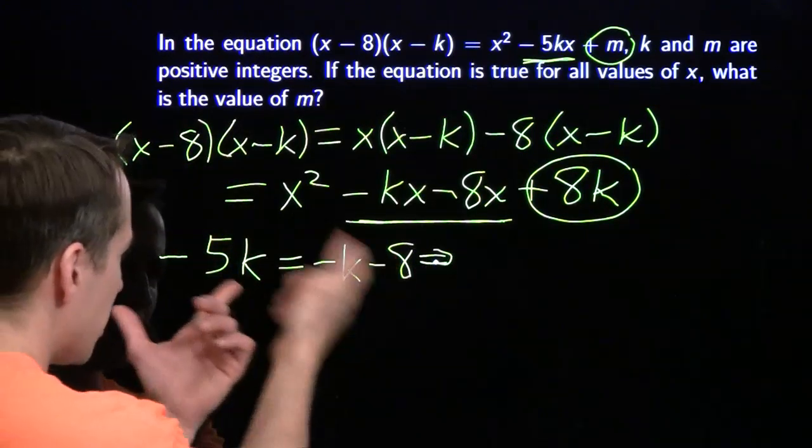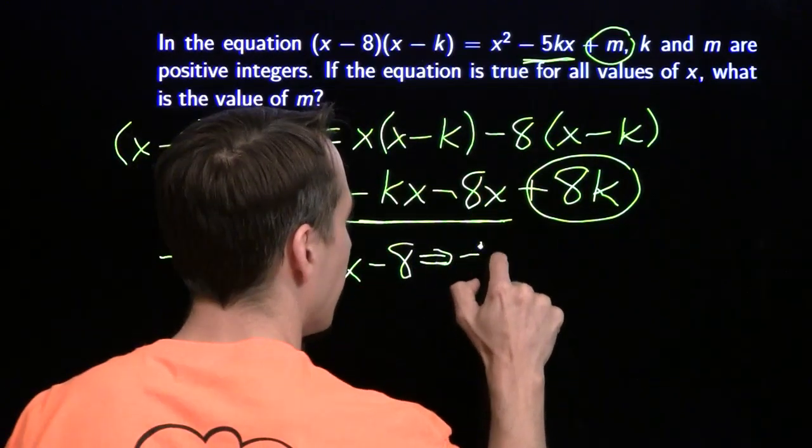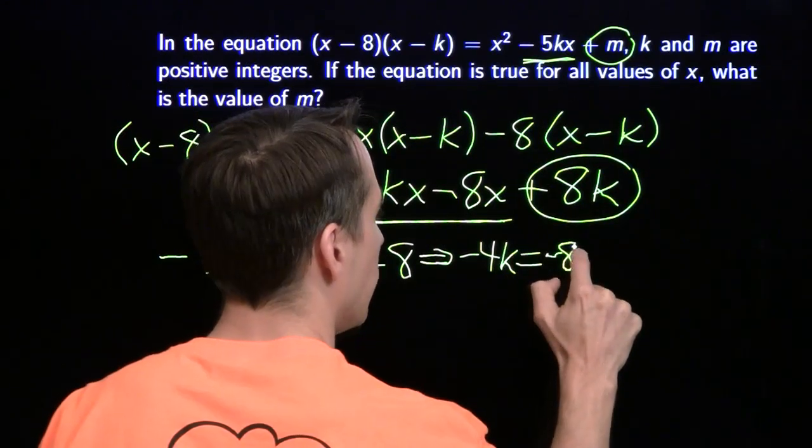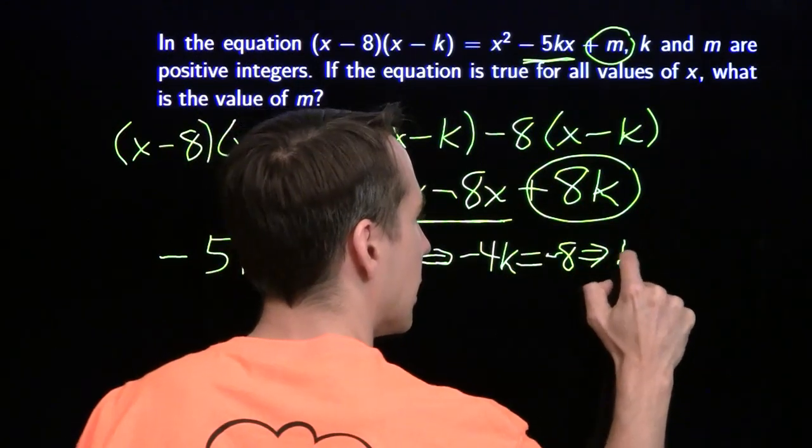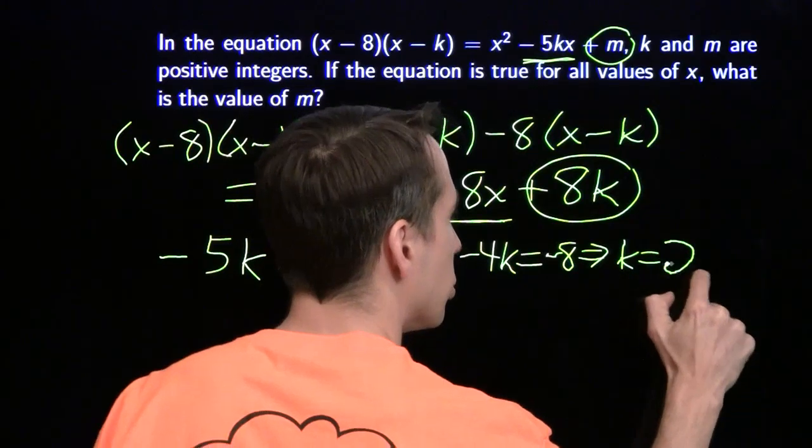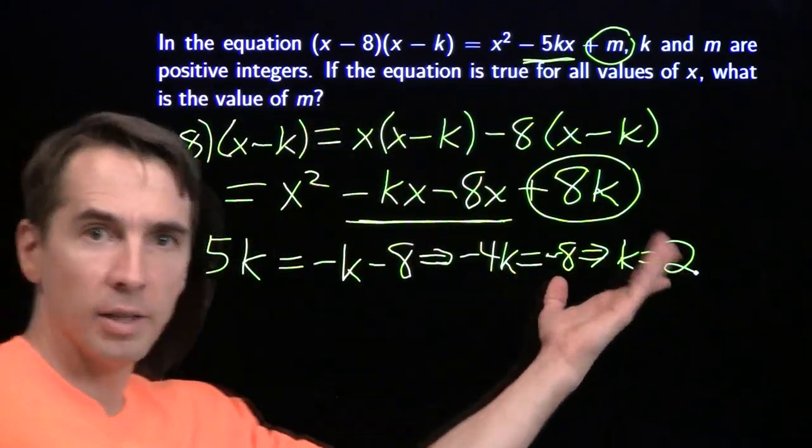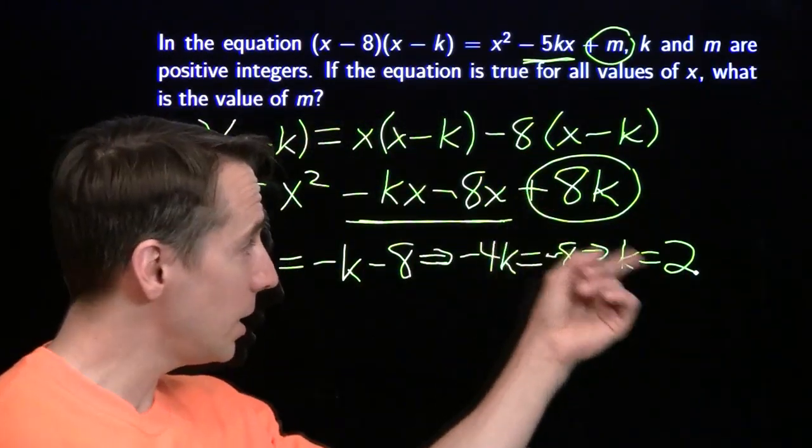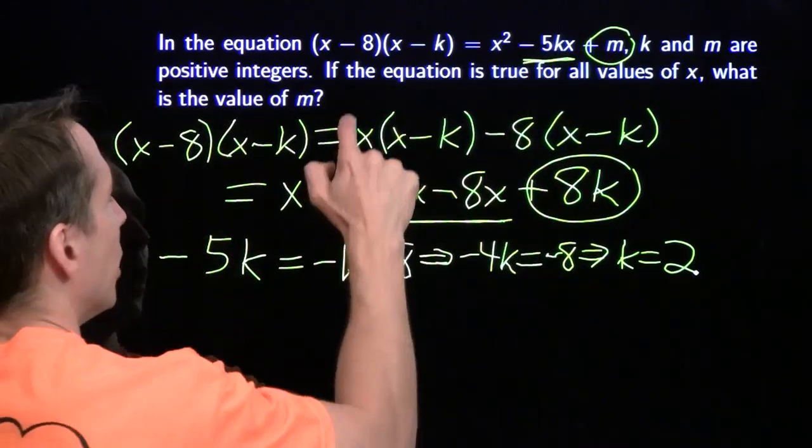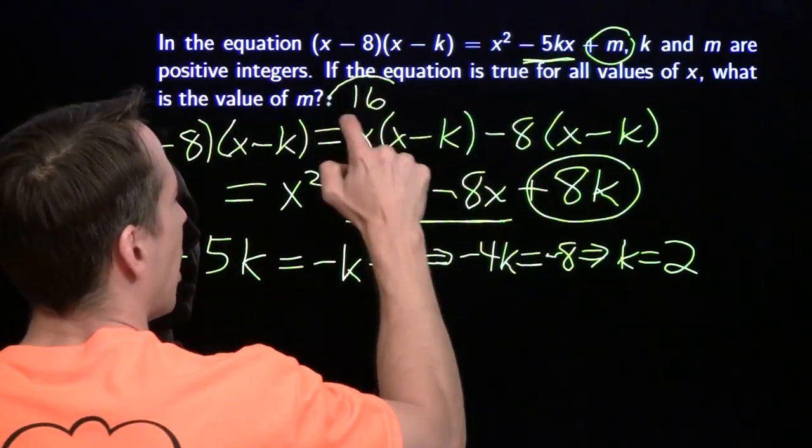So we have minus 5k equals minus k minus 8. I'll just add k to both sides. I'll have minus 4k equals minus 8, which of course tells us k is 2. Once we have k is 2, we go ahead and drop it in there. 8 times 2 is 16, that gives us m, and we have the answer to the problem.